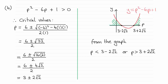Hi there. Now for this last part then, we had to find the values of p which satisfied this inequality: p squared minus 6p plus 1 was greater than 0.